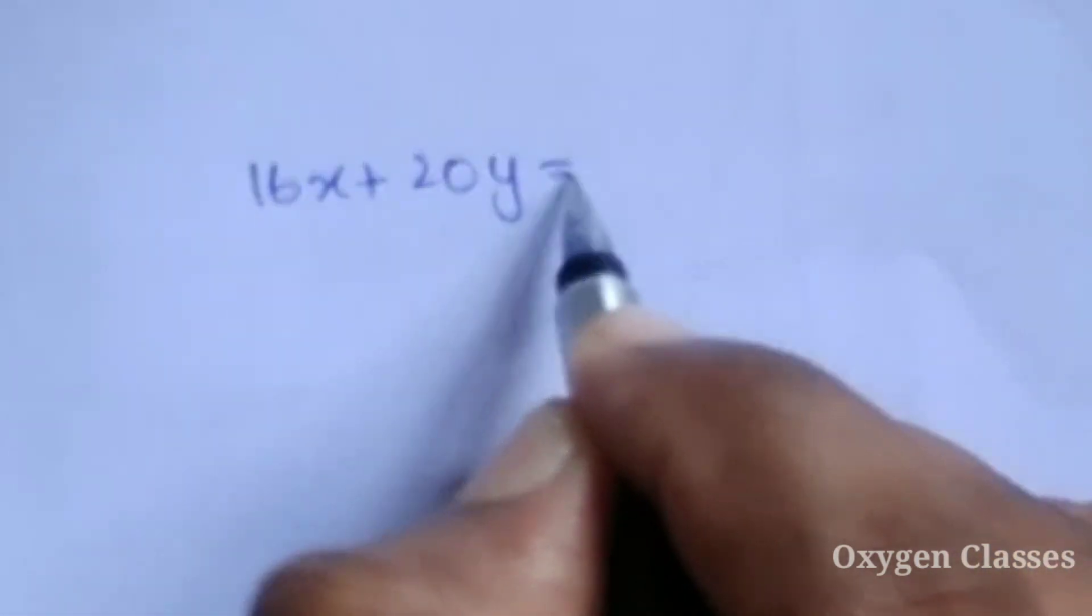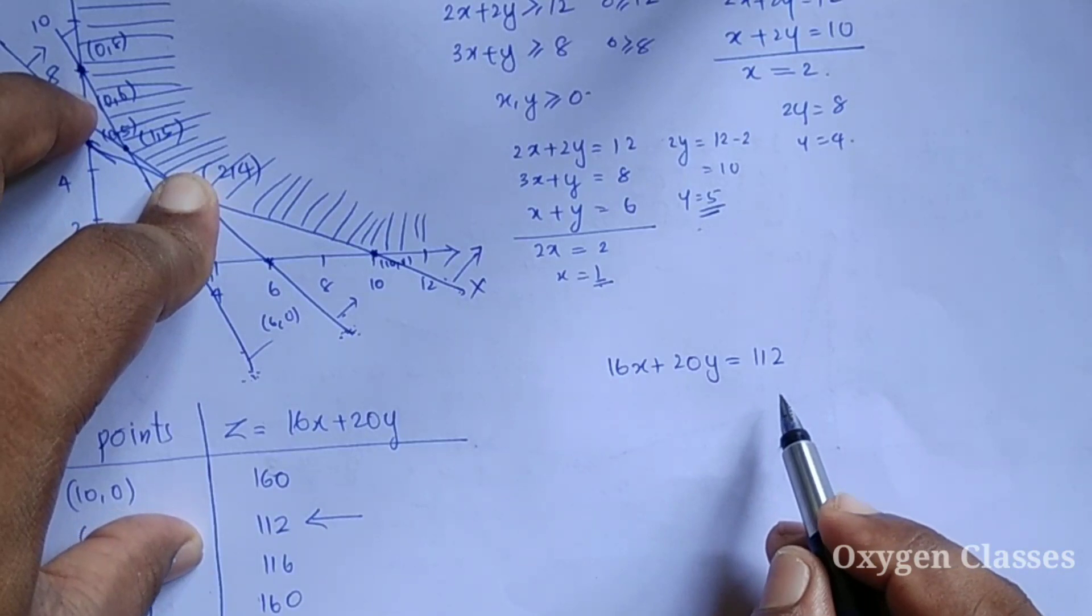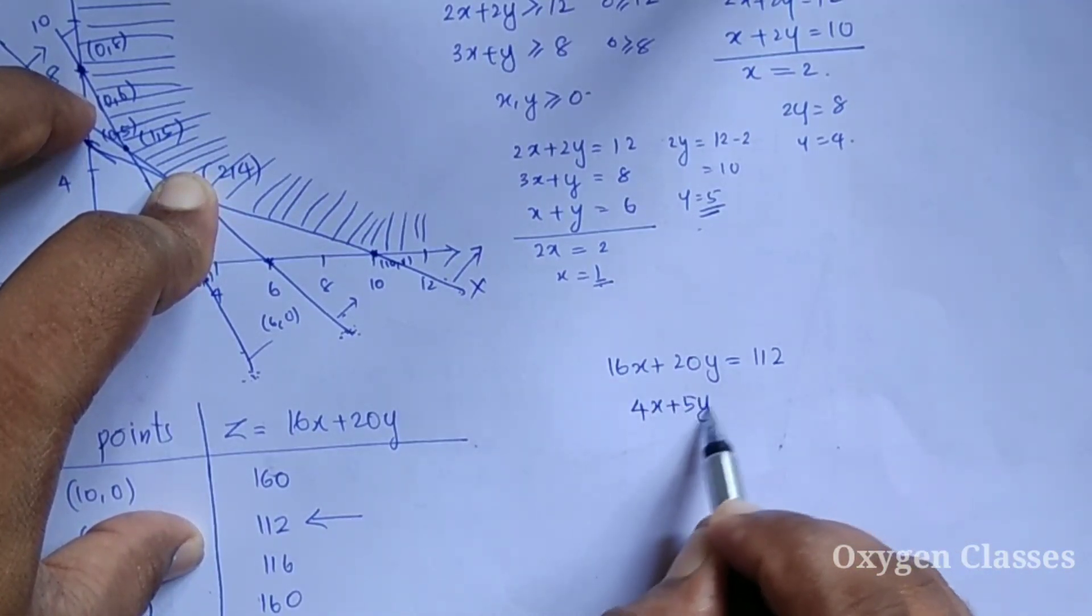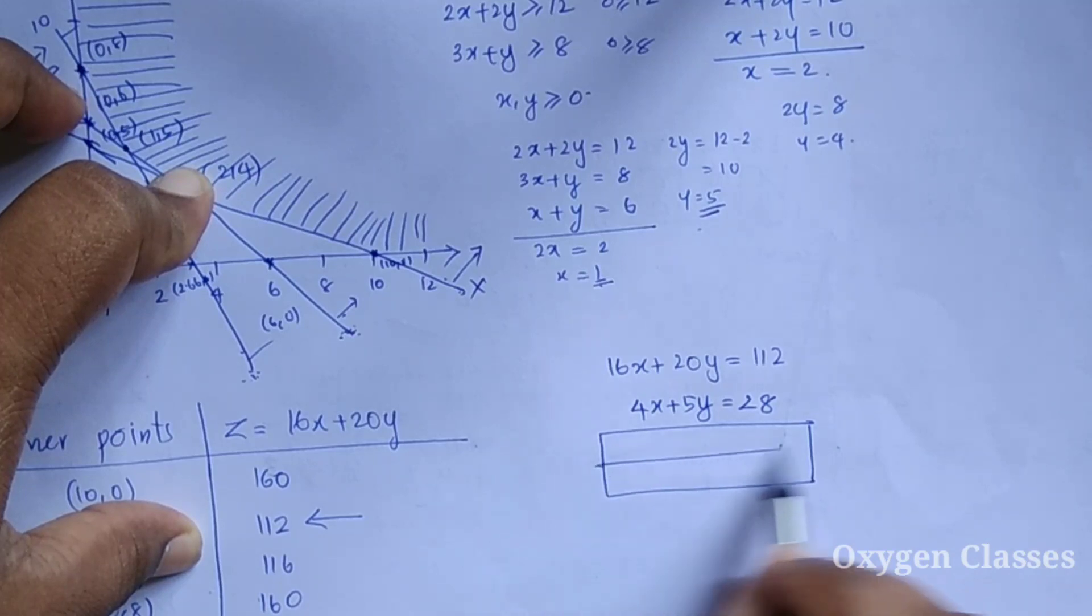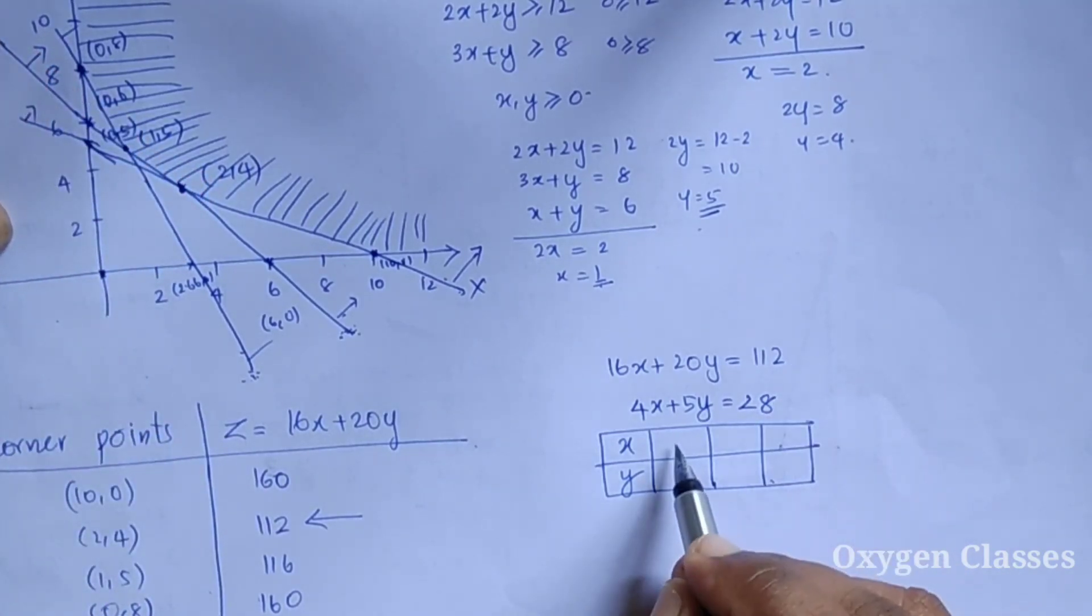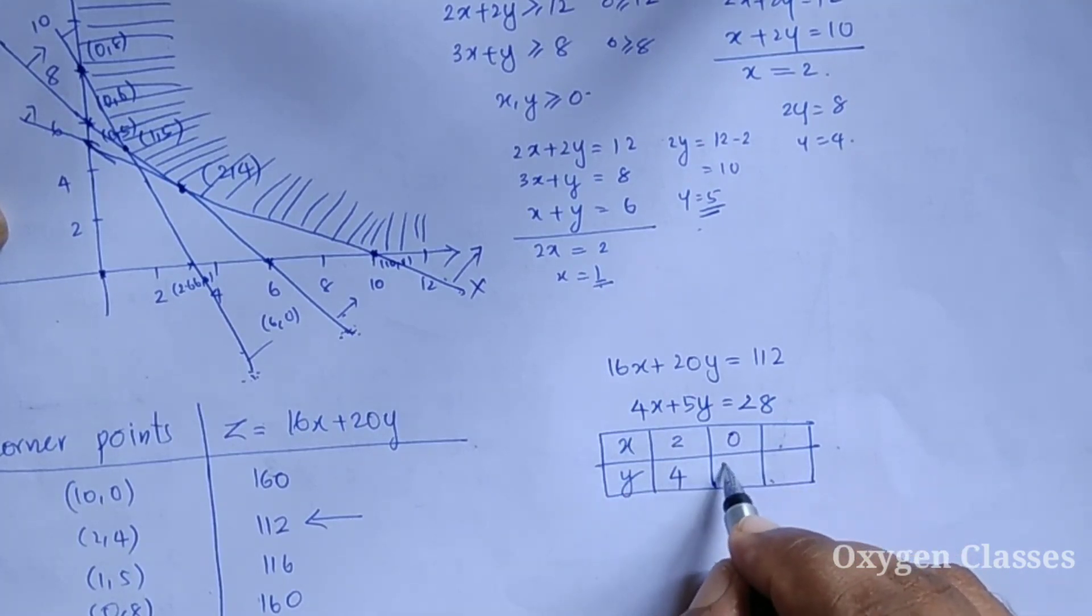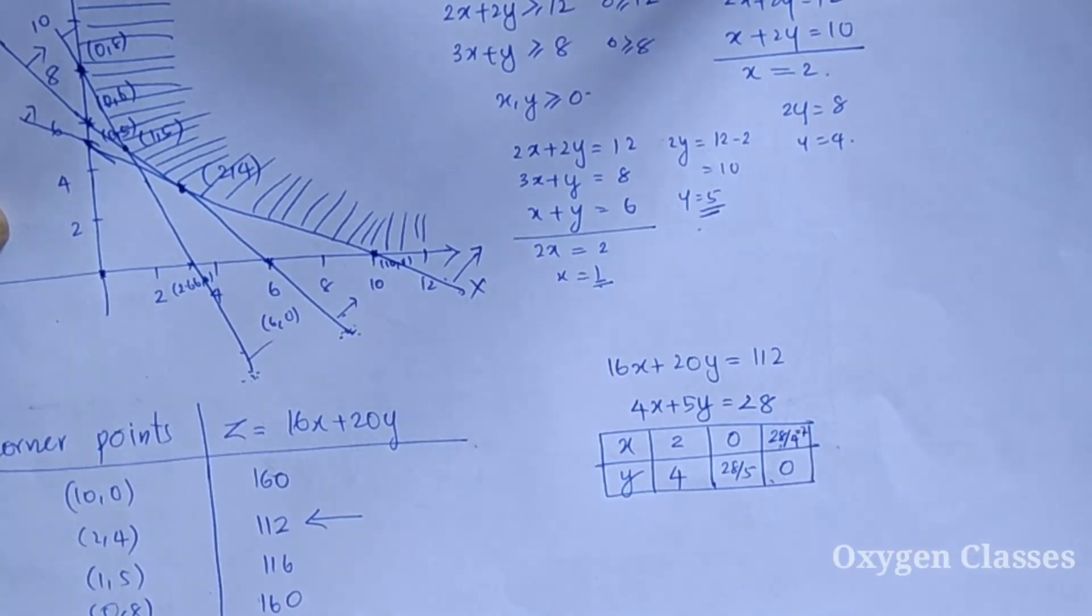The minimum value is 112 at point (2, 4). But this is an unbounded type of problem, so we need to verify. We draw the line 16X plus 20Y equal to 112, which simplifies to 4X plus 5Y equal to 28. If X is 0, Y is 28/5. If Y is 0, X is 7.